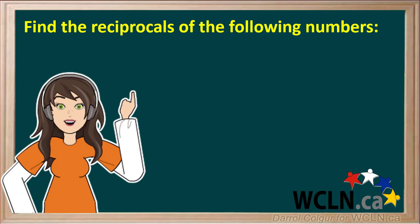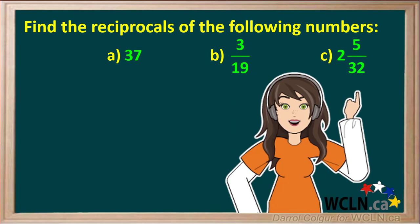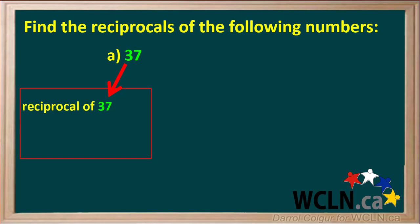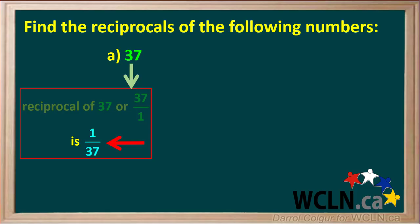Here are some for you to try. Find the reciprocals of these three numbers. Pause the video, figure these out, and jot your answers down. Then resume the video and check your answers. To find the reciprocal of 37, we divide 37 by 1 to give us the fraction 37/1. To find its reciprocal, we just flip this fraction, and we get the final answer 1/37, or one thirty-seventh.